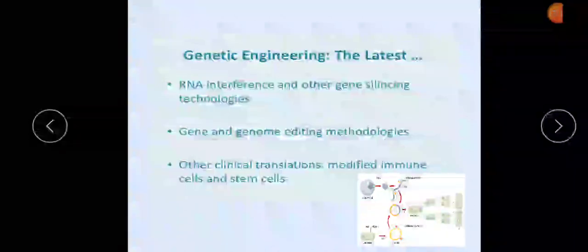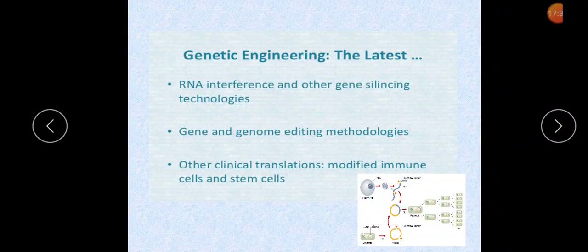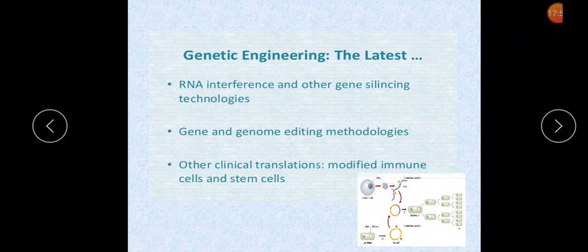The latest discoveries in genetic engineering include RNA interference and other gene silencing technologies, gene and genome editing methodologies, and clinical translations such as modified immune cells and stem cells. Following the elucidation of the DNA structure and genetic code, it became clear that many biological secrets were hidden in the sequence of bases in DNA. Technical and biological discoveries in the 1970s led to a new era of DNA analysis and manipulation, key among which was the discovery of two enzymes that made DNA cloning possible.